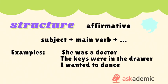The structure for a past simple affirmative sentence would be the subject plus the main verb plus the rest of the sentence. For example: she was a doctor; the keys were in the drawer; I wanted to dance.